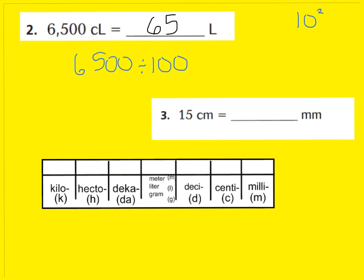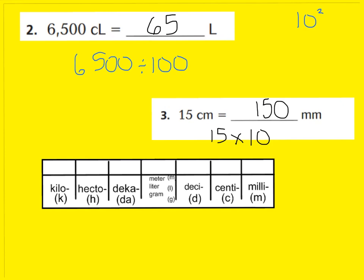Let's use the same strategy for number 3. It says 15 centimeters is equal to how many millimeters? I can see that centimeters is greater than millimeters by 1 power of 10, also known as 10. So we are going from a large unit to a smaller unit — when you go from large to small, you multiply. We're going to multiply 15 times 10, which is 150. So 15 centimeters is equal to 150 millimeters.